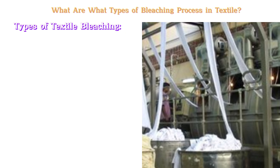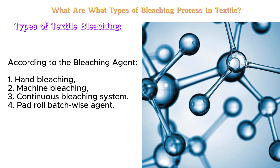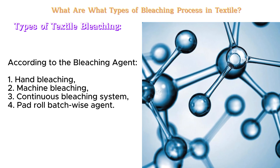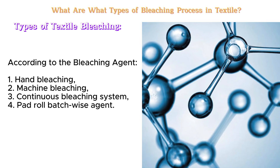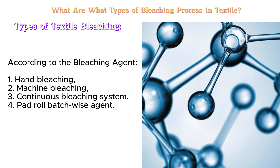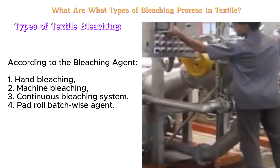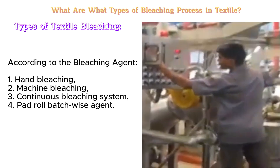Types of textile bleaching. According to the bleaching process: hand bleaching, machine bleaching, continuous bleaching system, and pad roll batchwise system.